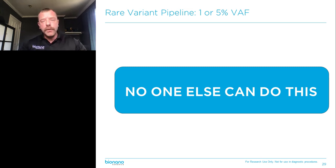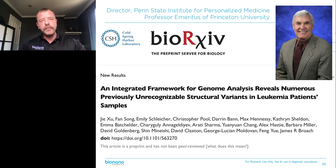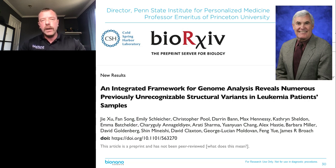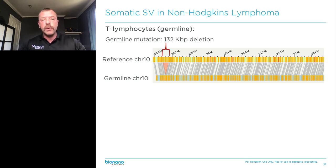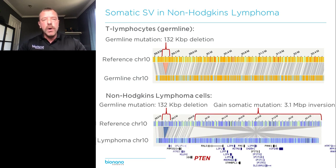I want to show you a couple examples from cancer — keep in mind that all of these findings apply to genetic disease as well. The first paper I want to talk about is from Dr. Jim Broach, who is Director of Personalized Medicine at the Penn State Institute in Hershey. He published work on a dozen leukemia samples analyzed with NGS and BioNano. Here's a case of a non-Hodgkin's lymphoma where the T lymphocytes were cultured as a germline control, but when you look at the lymphoma cells, you actually see a three megabase inversion.